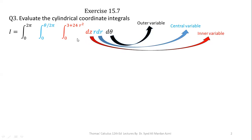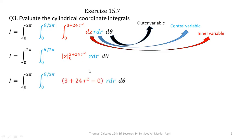The limits of Z are 0 to 3 plus 24R squared, limits of R are 0 to theta over 2pi, and limits of theta are 0 to 2pi. The integration of Z over the limits 0 to 3 plus 24R squared gives Z evaluated at those limits. Applying the fundamental theorem of calculus — upper limit minus lower limit — we get 3 plus 24R squared minus 0. This completes the integration with respect to Z.